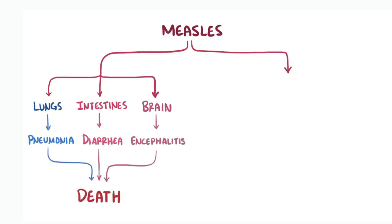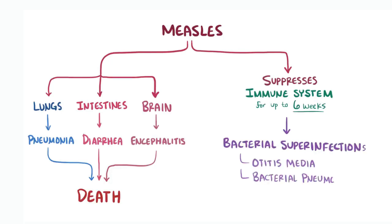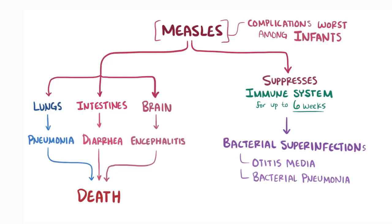In addition, measles can suppress the immune system for up to six weeks, and this can contribute to bacterial superinfections like otitis media and bacterial pneumonia. All of these complications are worst among young infants, who typically have the highest rates of mortality during a measles outbreak.